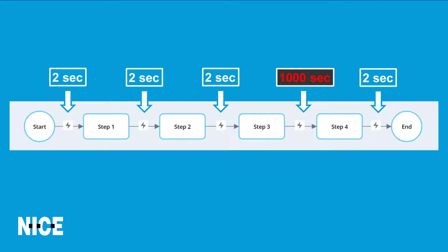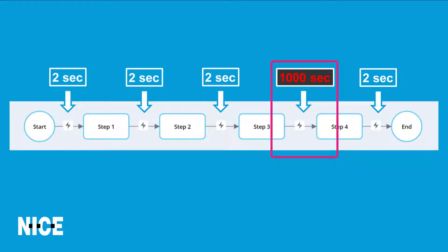To demonstrate how the workflow monitoring solution functions, the example project includes a simple workflow. The steps themselves are empty, but there are time delays on all the transitions. The delays between all transitions have been set to 2 seconds, but the delay on the transition exiting step 3 has been set to 1000 seconds to simulate a problem in step 3.